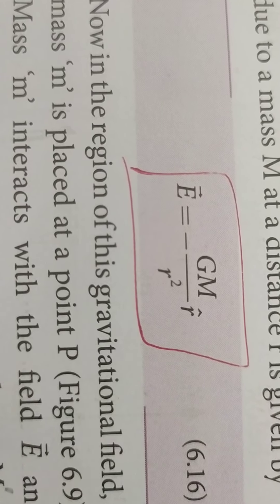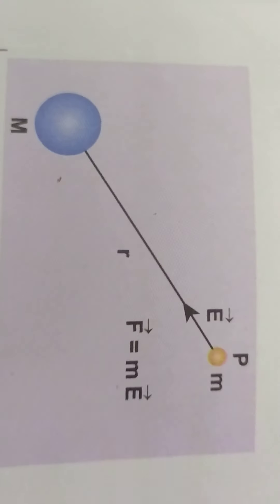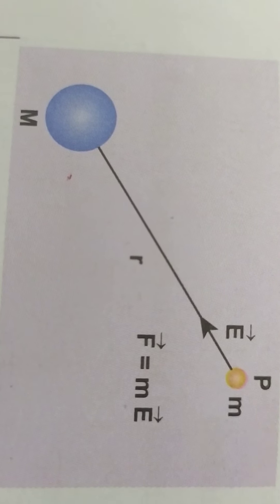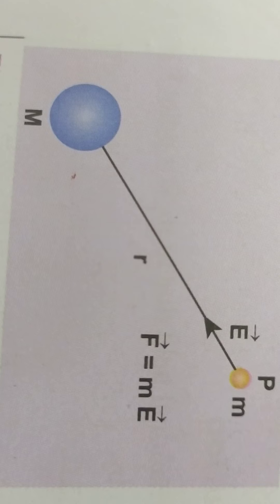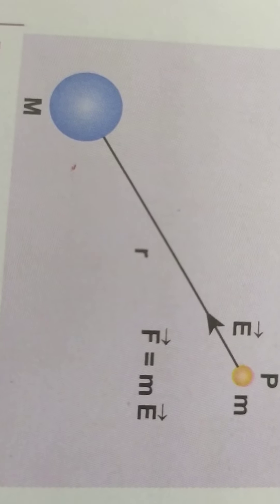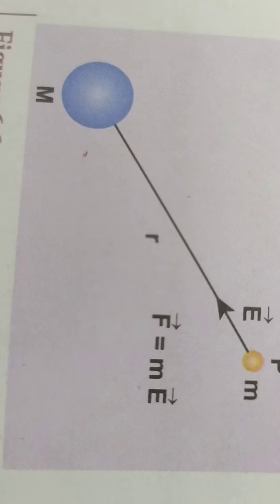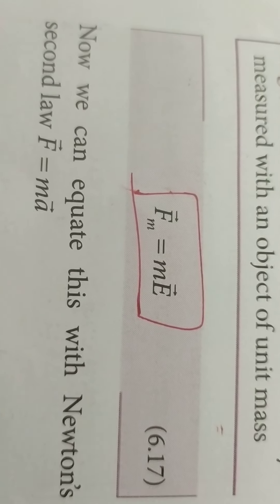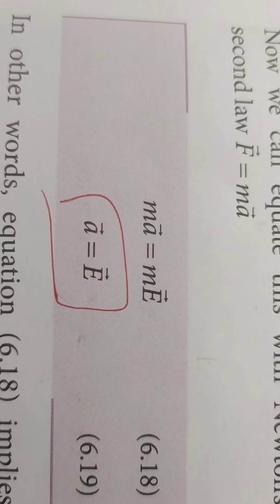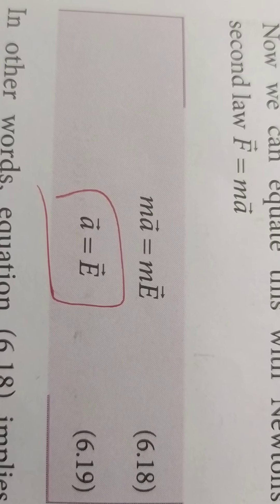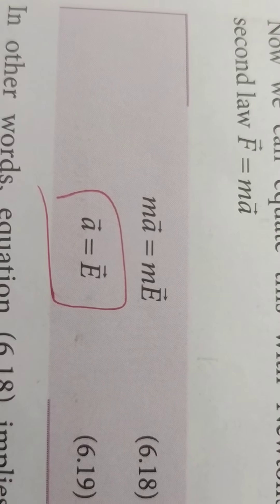Here we are replacing small m with capital M. There is a big mass M and you consider a very small mass at a distance R from this big mass. E vector is the gravitational field intensity vector, directed from the small mass toward the capital mass due to attractive force. F vector equals M·E vector, because F equals MA according to Newton's second law. So M·A vector equals M·E vector, giving A vector equals E vector. The gravitational field intensity is nothing but the acceleration experienced — that is the main point.